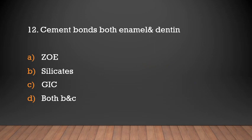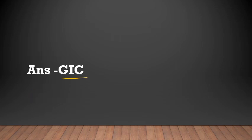Cement that bonds both enamel and dentin: (a) zinc oxide eugenol, (b) silicates, (c) GIC, (d) both B and C. Answer: GIC. Glass ionomer cement bonds both enamel and dentin.